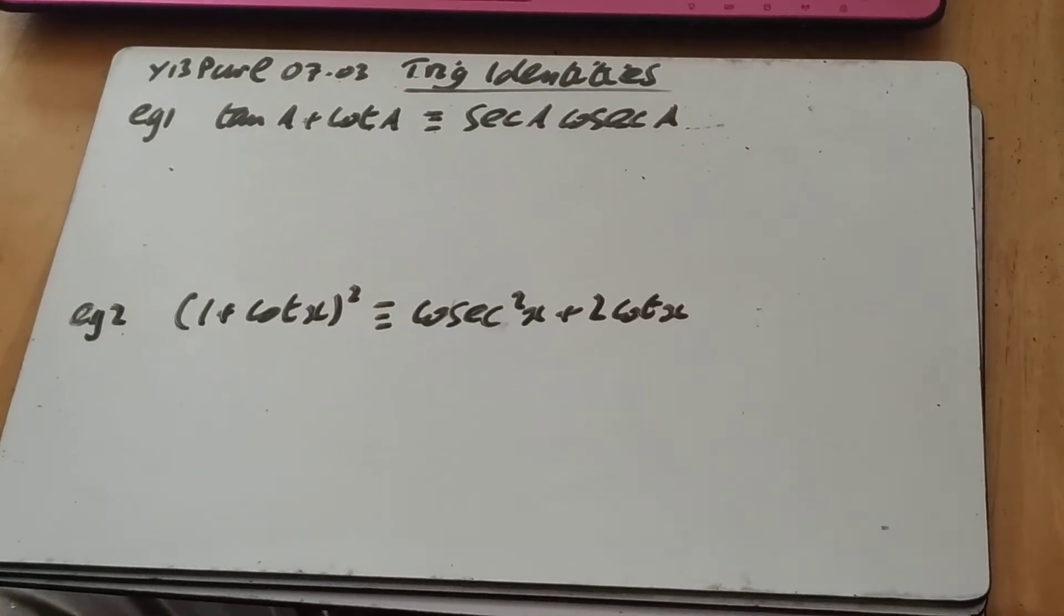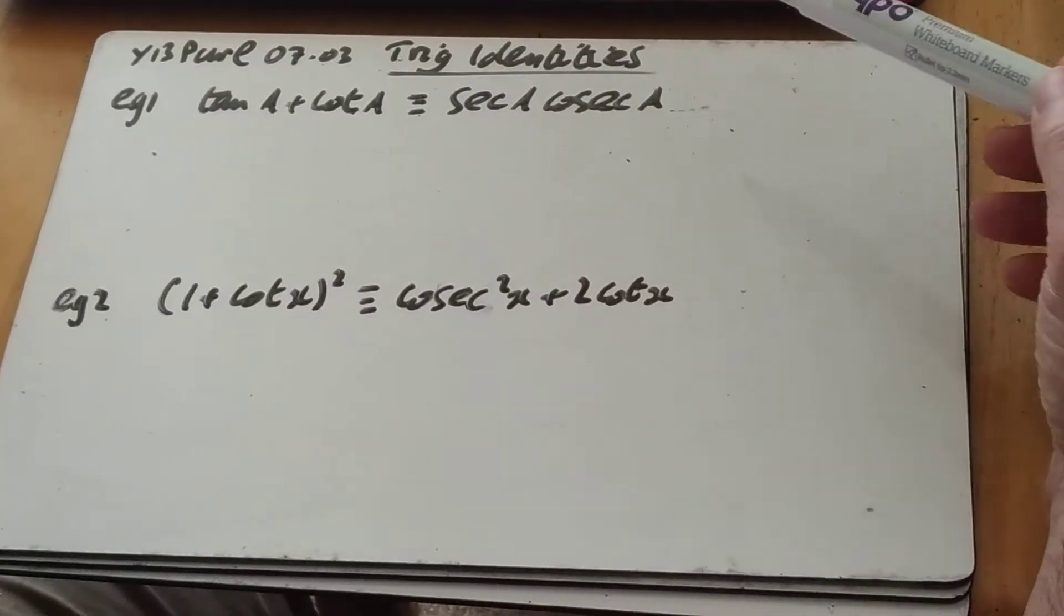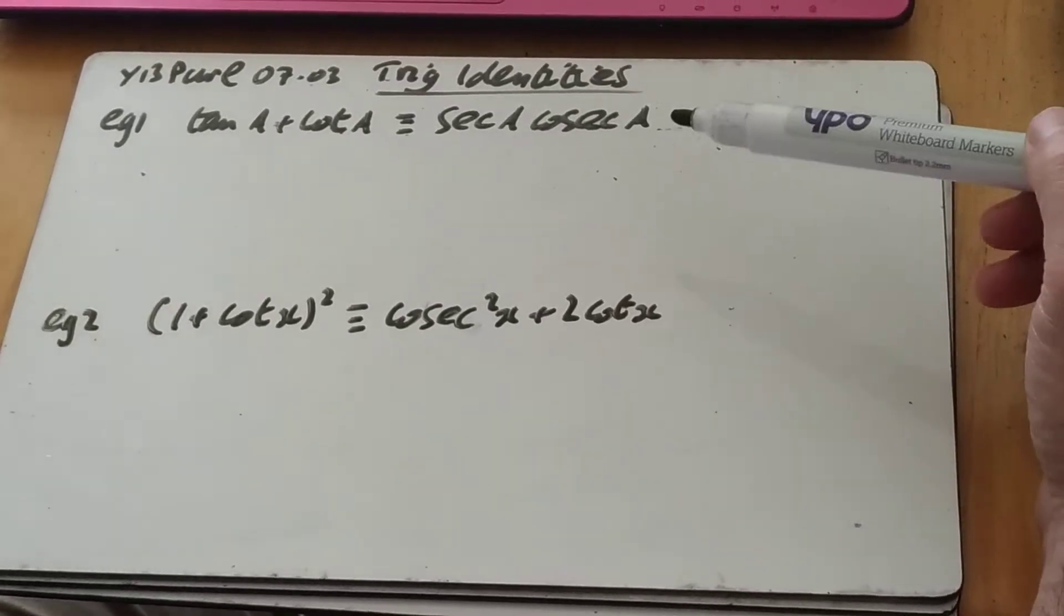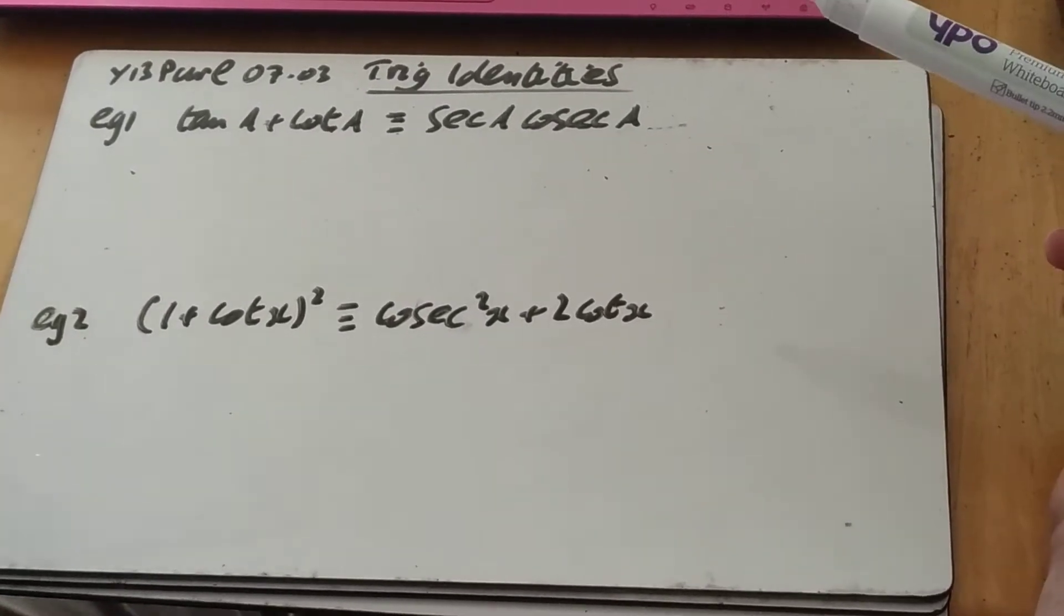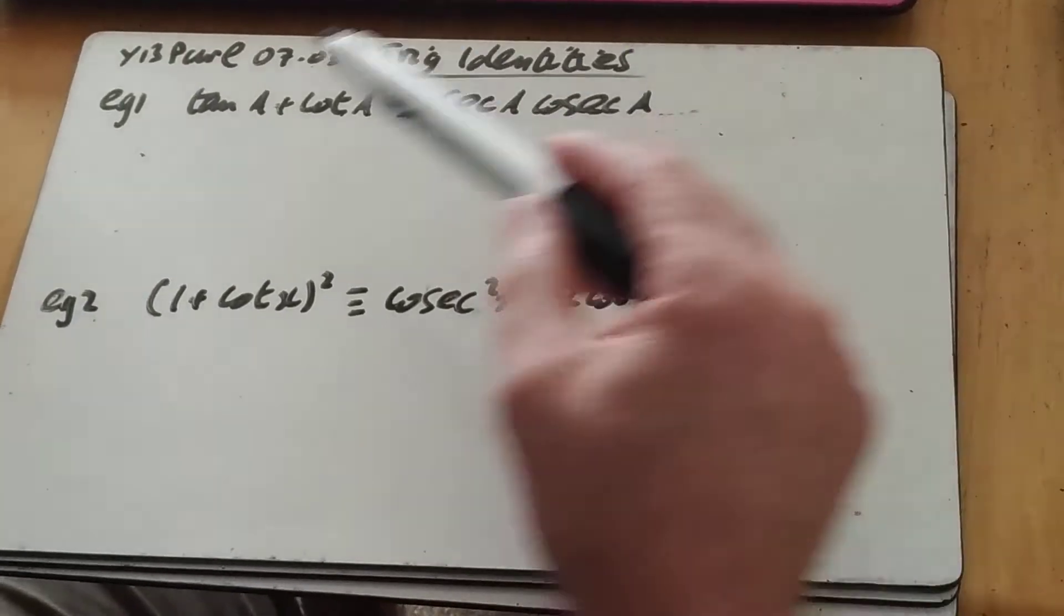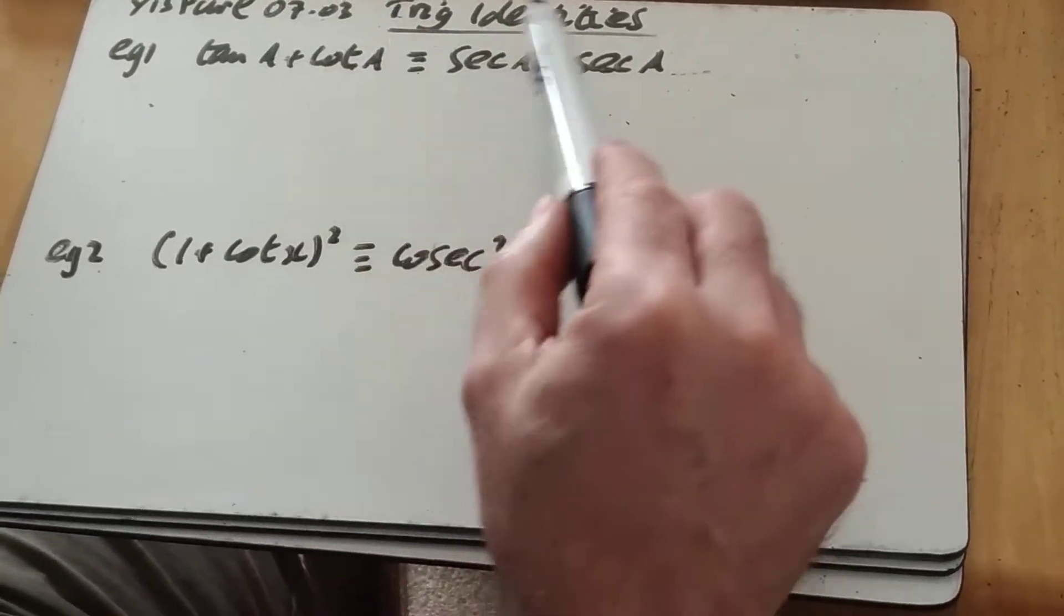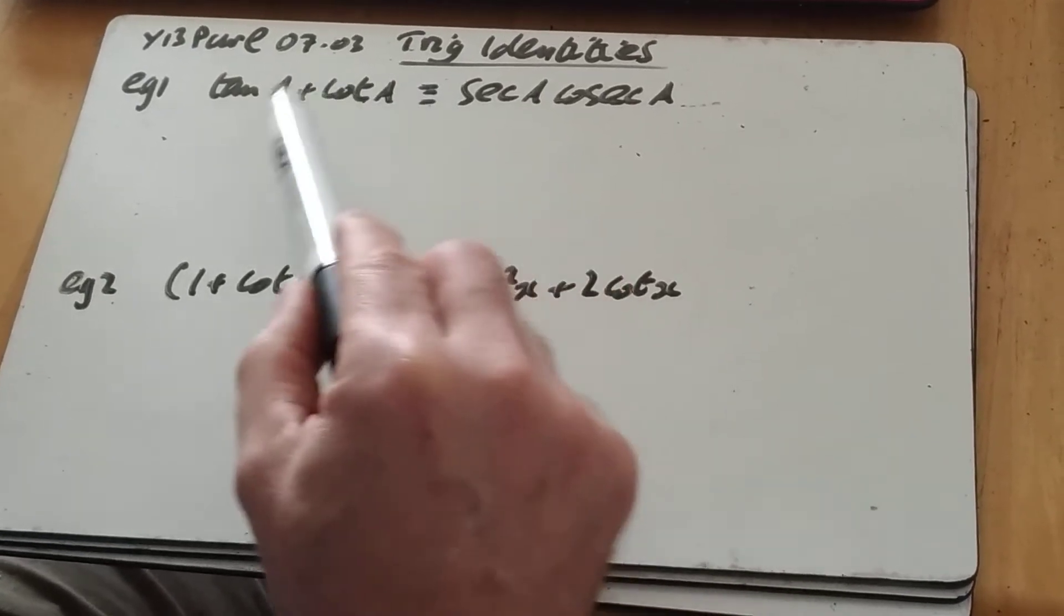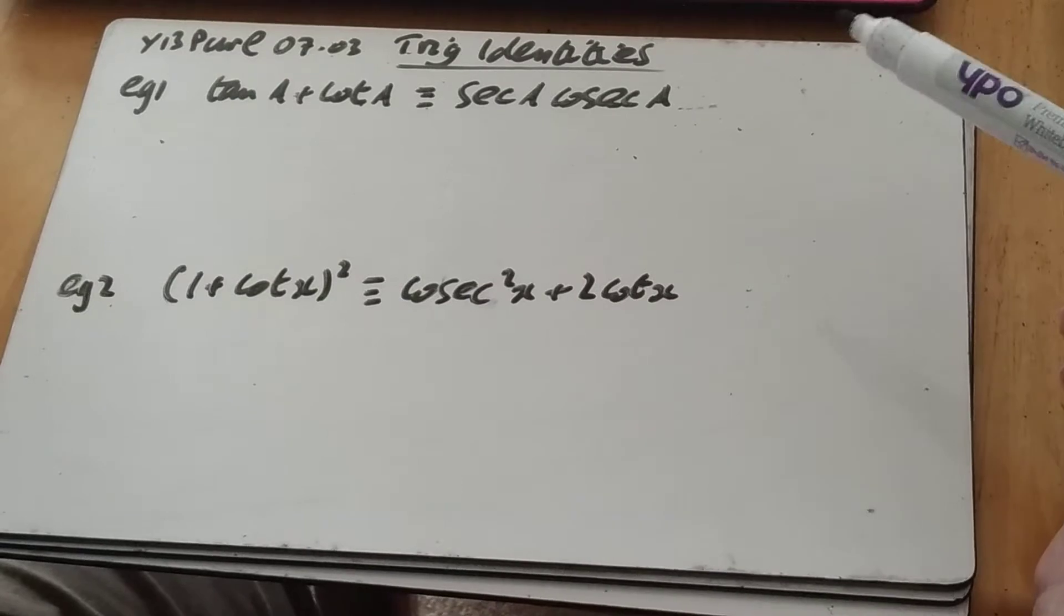Hi there. Today we're going to be looking at trig identities. It's basically using what we saw last time - sec, cot, cosec and our Pythagorean identities to rewrite expressions. It's an identity because we've got this thing, the three-line rather than two-line for equals, which means it's true for all values of A in this case here.